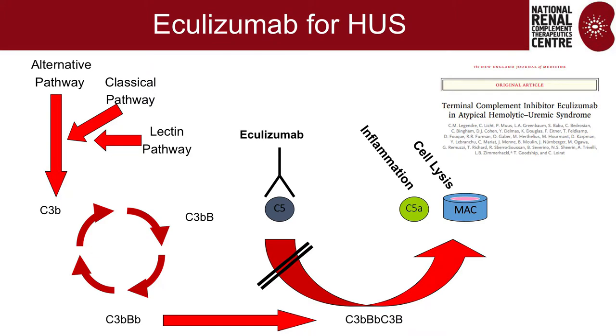This provided the rationale for the use of eculizumab. As has been said, eculizumab doesn't actually stop that amplification loop — it acts downstream to bind to C5 and stops inflammation and cell lysis.